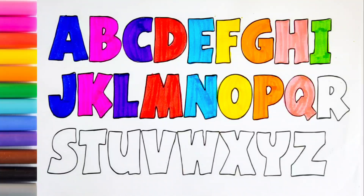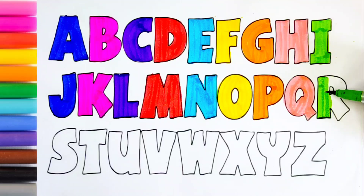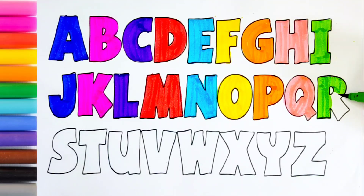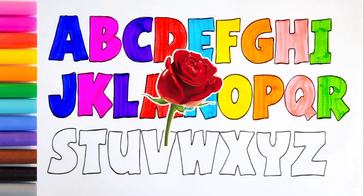Light green color. R. A, B, C, D, E, F, G, H, I, J, K, L, M, N, O, P, Q, R, S, T, U, V, W, X, Y, Z. R for rose, R for rose. Blue color.